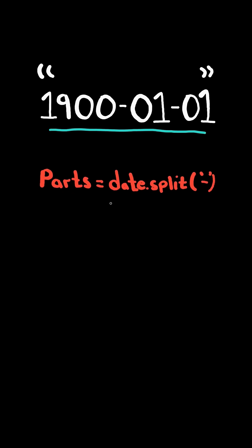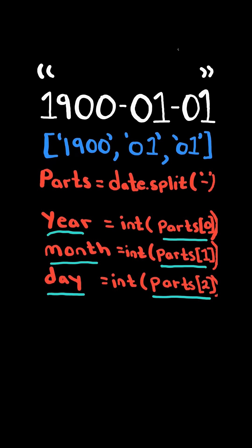First, we will split the date by a dash. This gives us a list of each component. We will extract the year, month, and day from the list and convert it to integer.